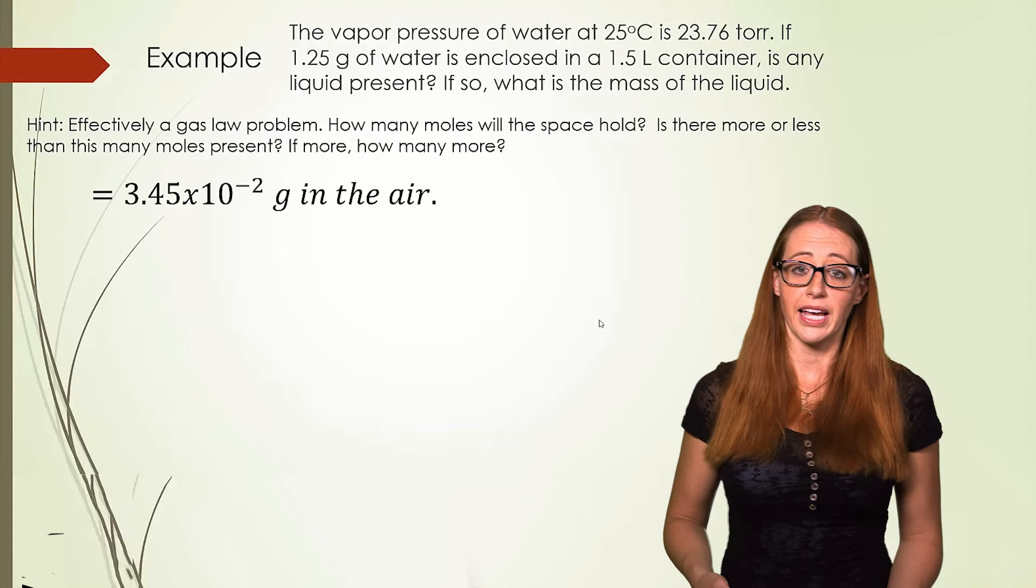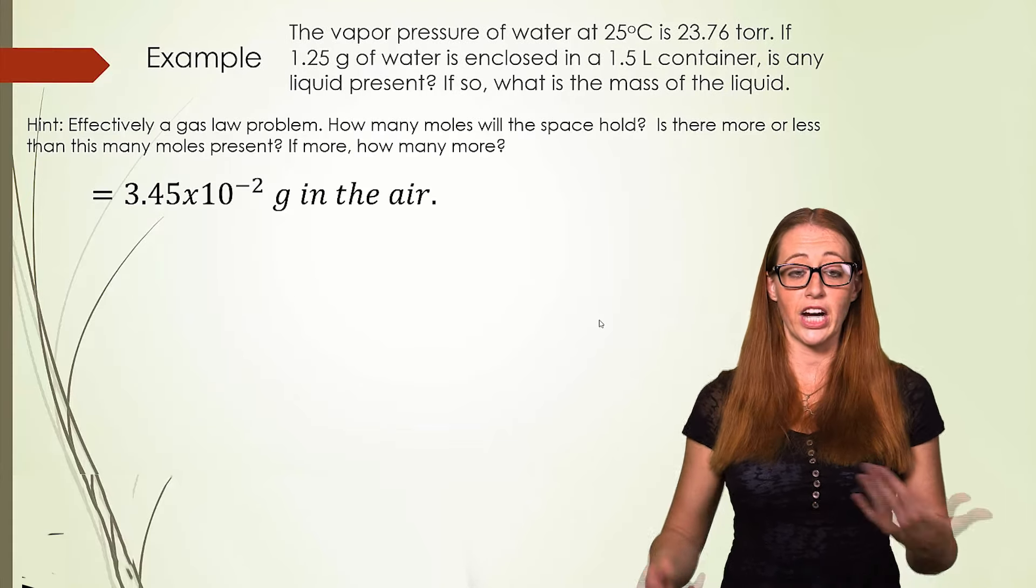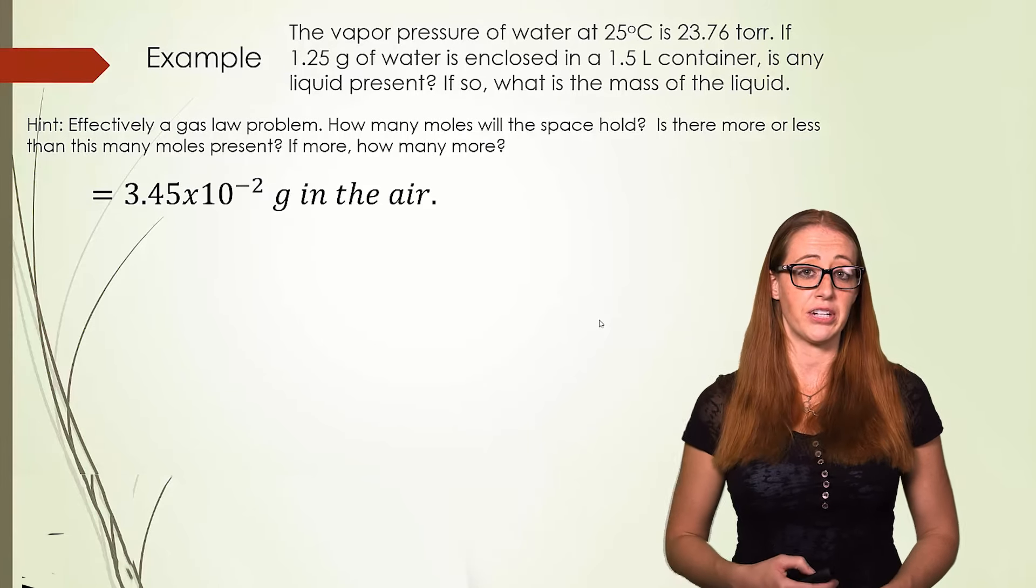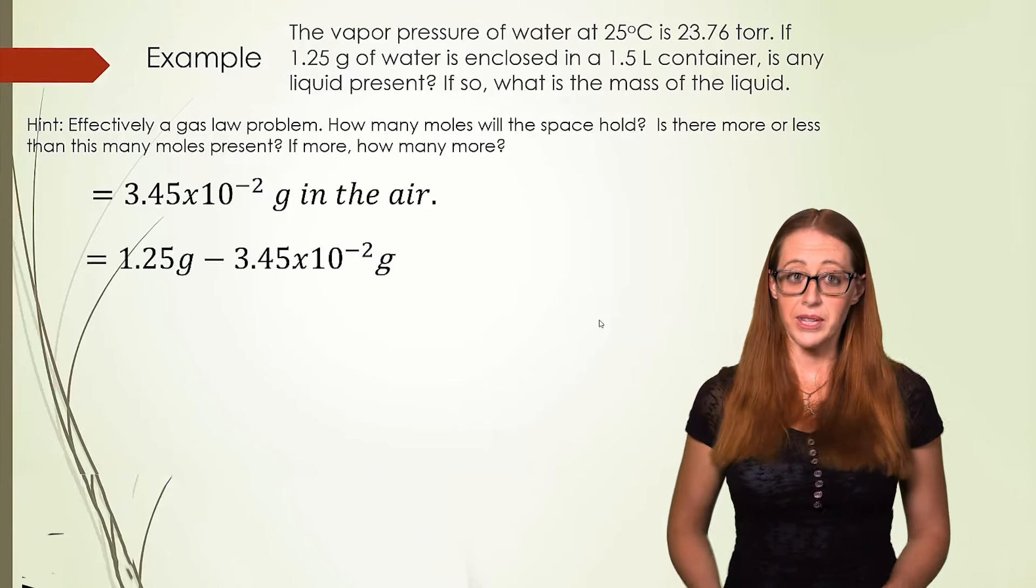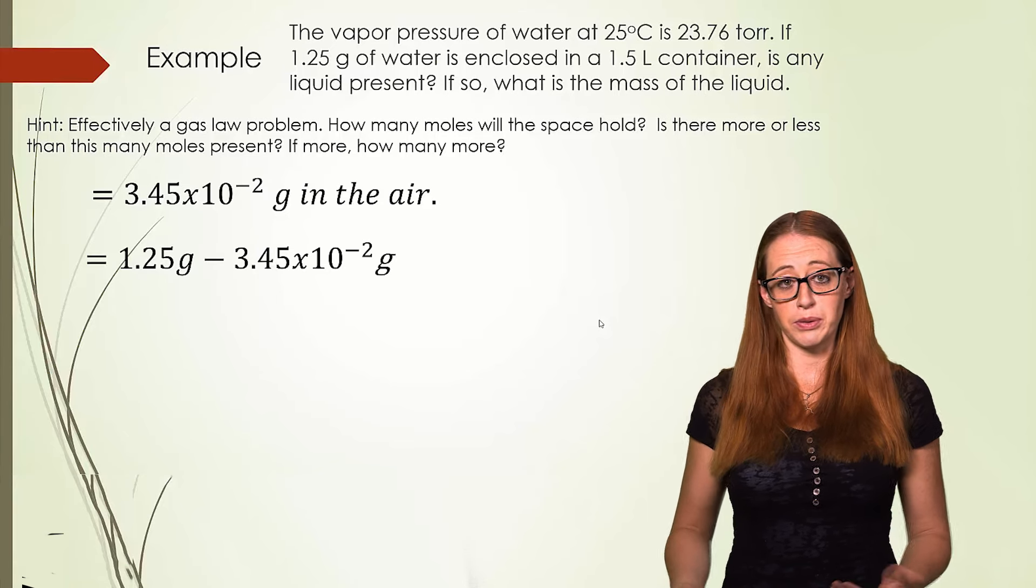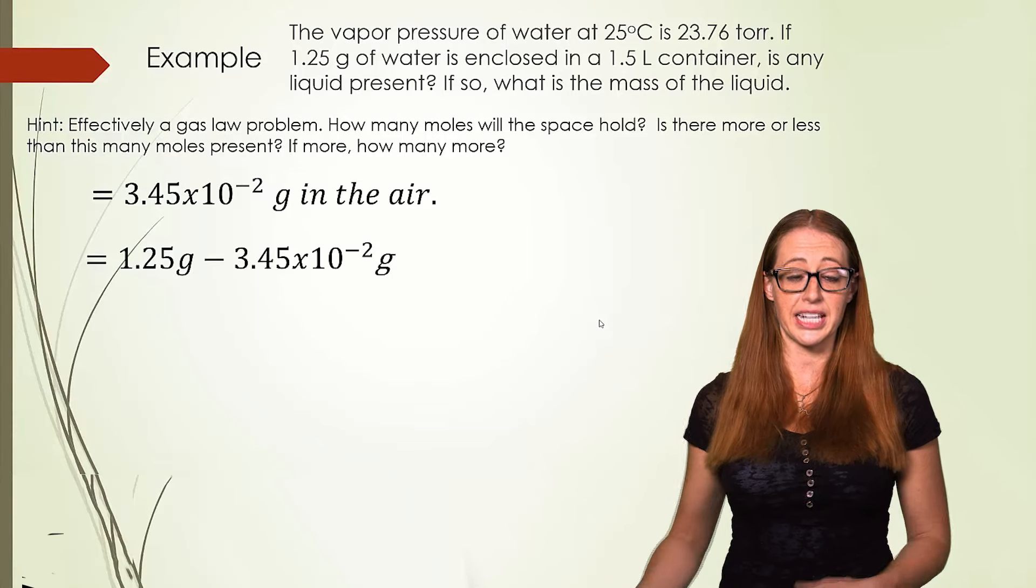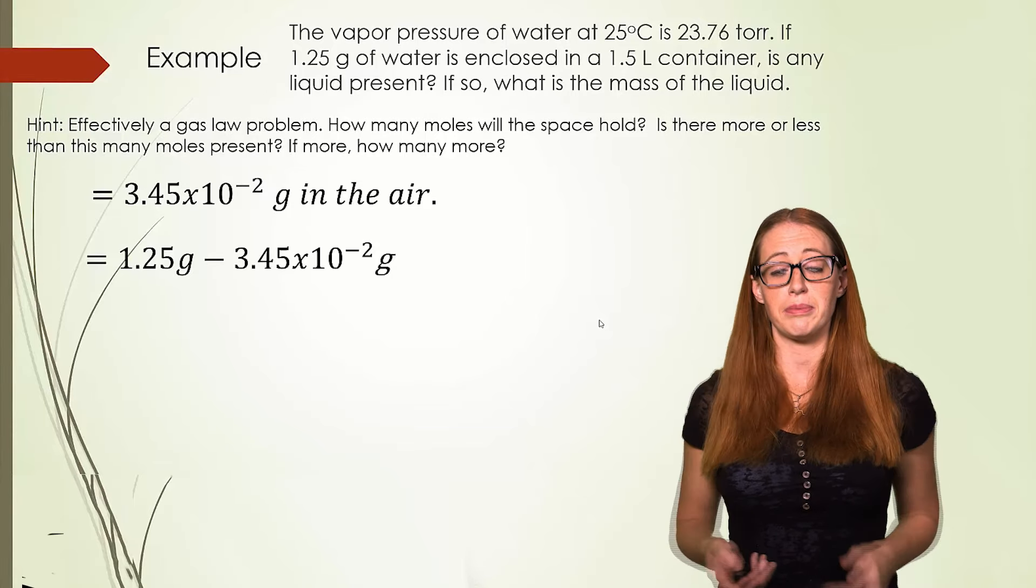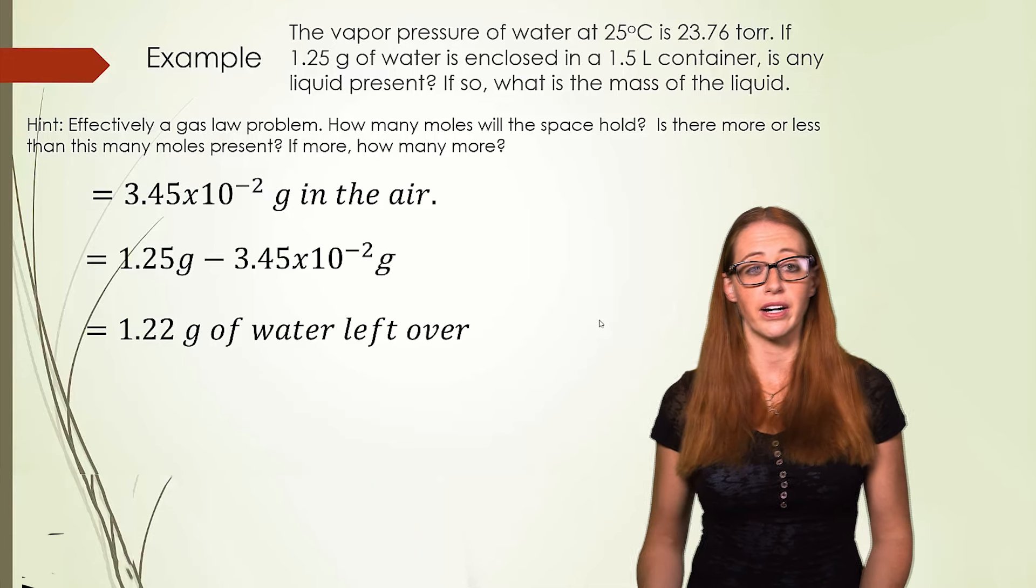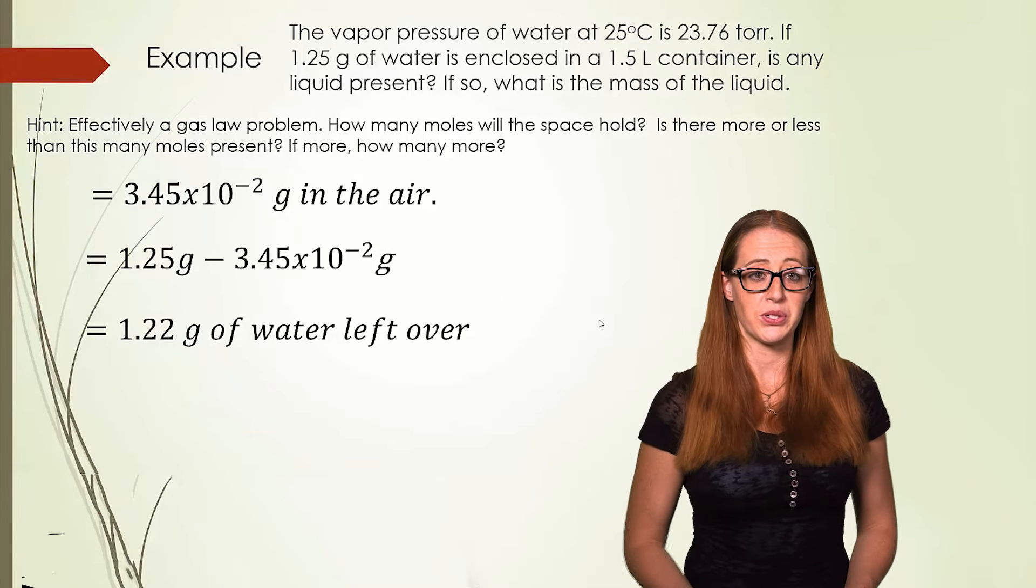Our final step is to look at how many grams that the air can hold of water as compared to how much water we put into the container to begin with. We started with 1.25 grams and removed 3.45 times 10 to the negative second grams of water and moved it up into the air. This leaves us with some water left over, specifically 1.22 grams.